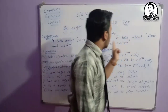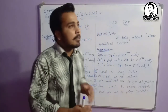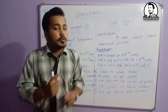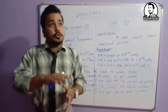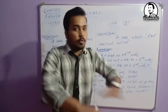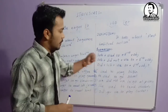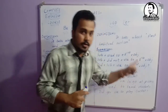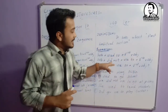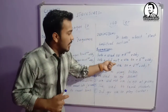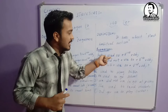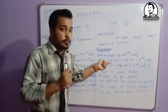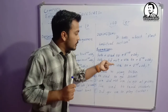Now let's come to 'used to'. The definition: it talks about past habitual action — is ka matlab hota hai woh kaam jo aap pehle kiya kartate the magar ab nahi karte. You guys used to do something but now you don't. Formation: subject plus used to plus first form plus object — that's affirmative. For negative: subject plus did not plus used to plus first form plus object.